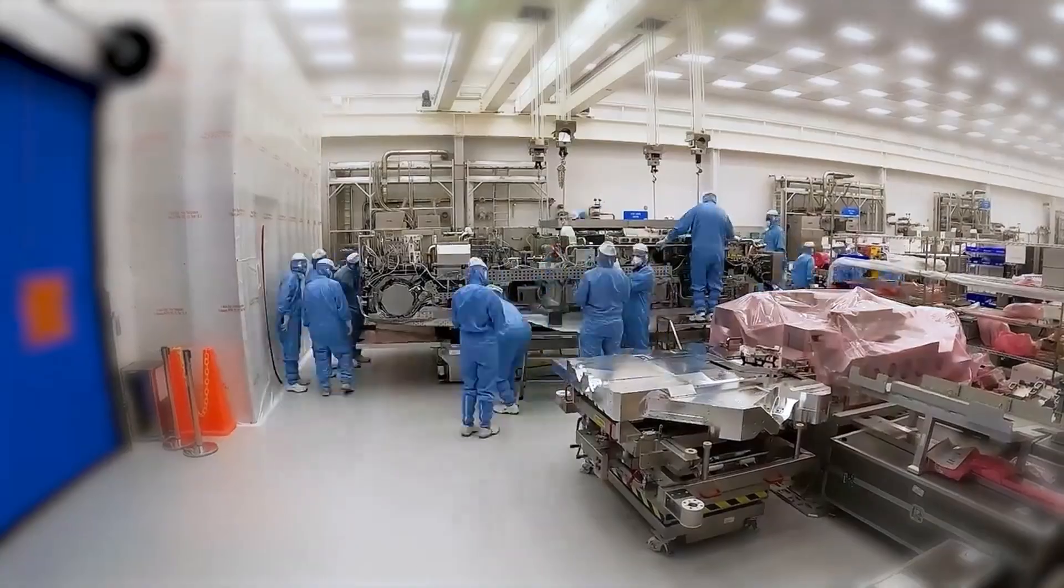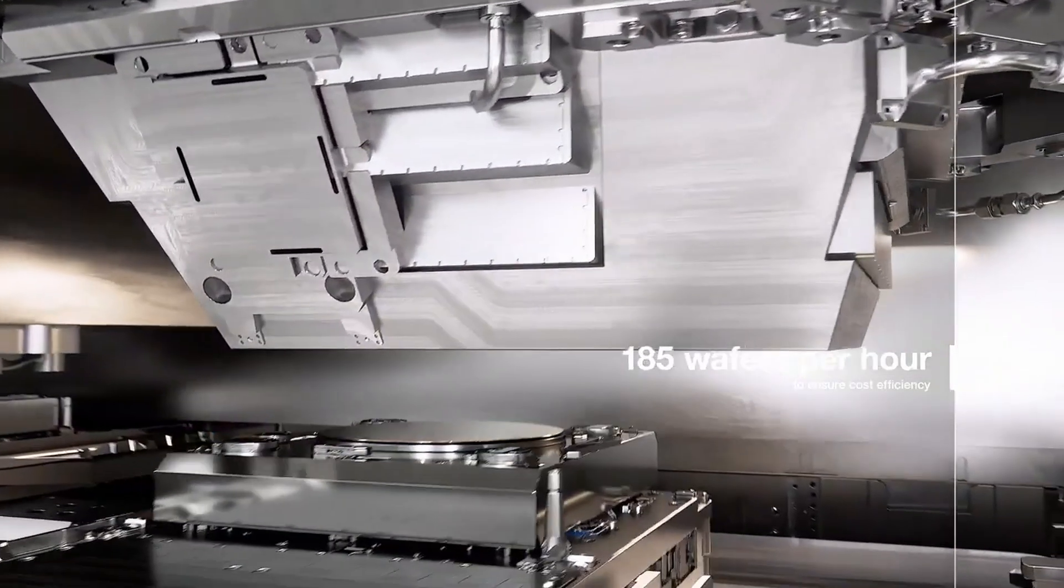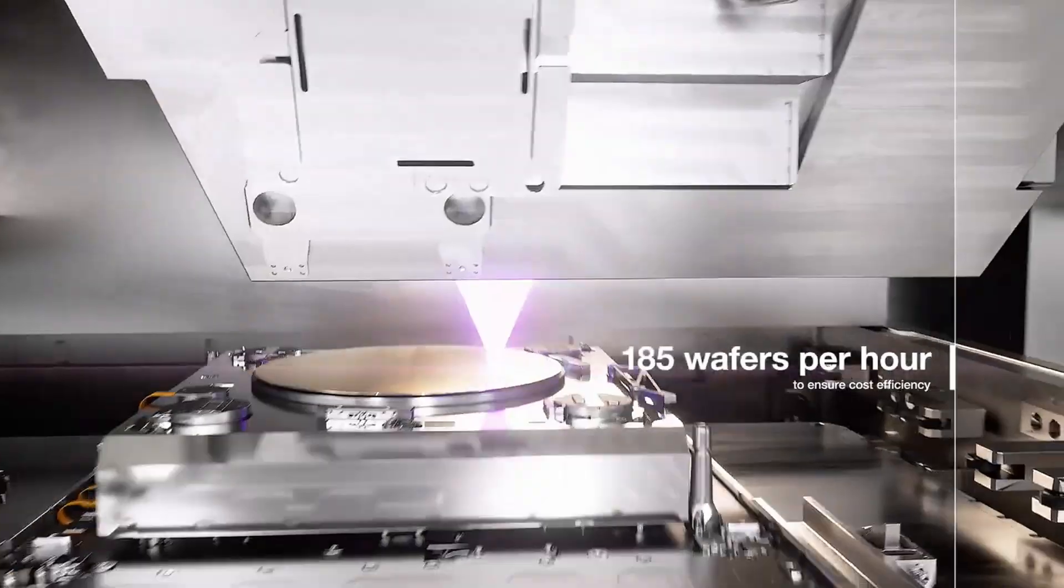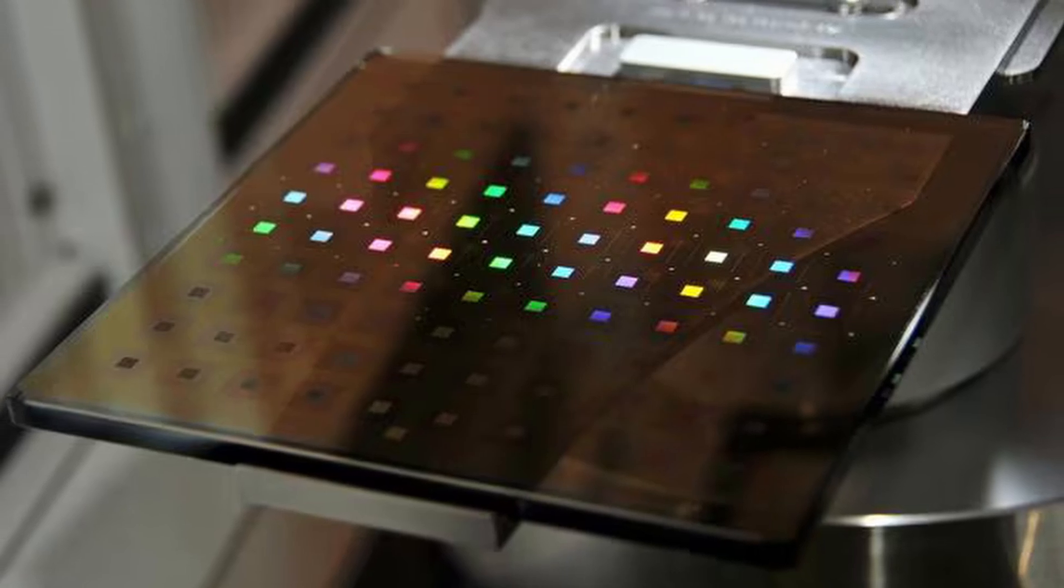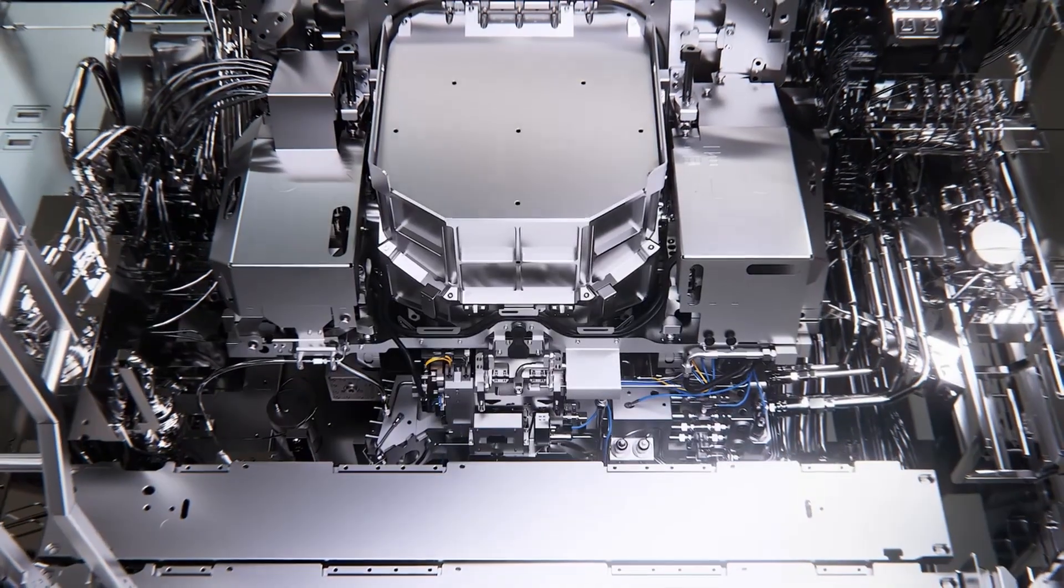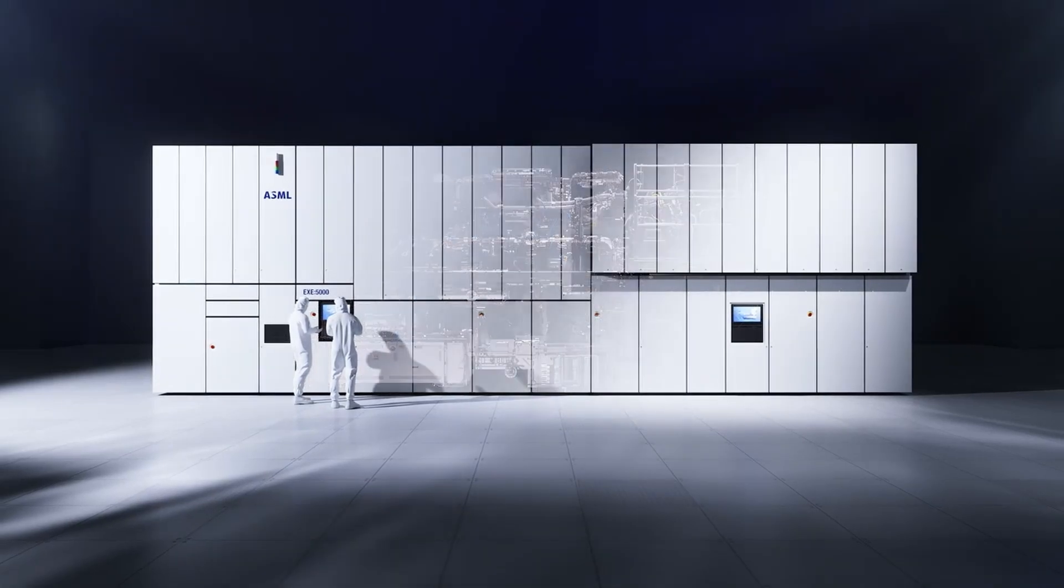Combining these solutions, the Twinscan XE 5000 can print 185 wafers per hour, with prevision of reaching 220 wafers per hour, without needing to modify the masks or compromise economic yield and ensuring that the integration of high NA EUV in factories is economically viable.